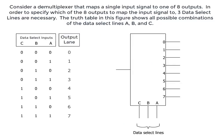Consider a demultiplexer that maps a single input signal to one of eight outputs. In order to specify which of the eight outputs to map the input signal to, three data select lines are necessary.